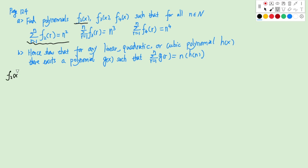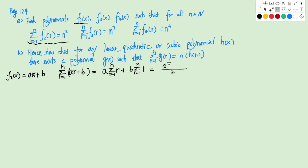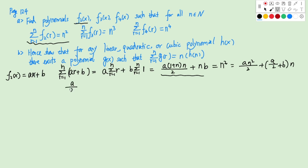We can probably write F2(x) as Ax plus B. So let's write the sum: sigma R from 1 to N of (AR plus B). Because we have F2(R), we change x to R. This will be A times sigma from 1 to N of R, plus B times sigma from 1 to N of 1. Using the formula, we have (A/2) times 1 plus N times N, plus NB. This should equal N squared.